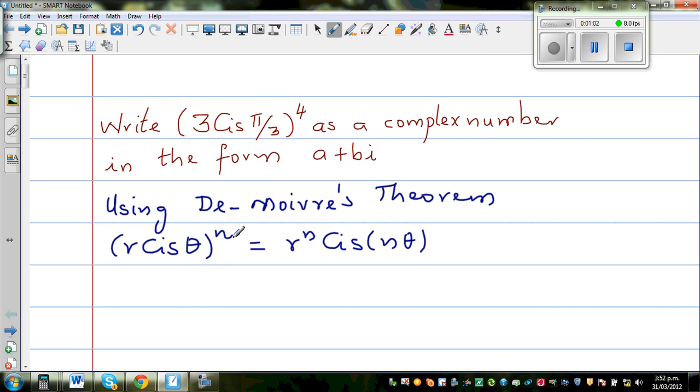When you raise a complex number in polar form by n, you raise the modulus or absolute value by n, and you multiply the argument, which is the angle, by n. That's the simple rule.